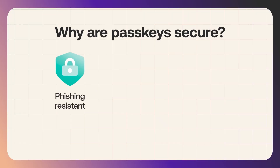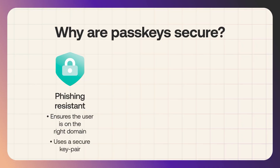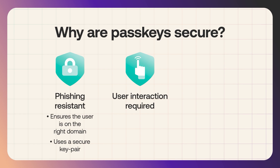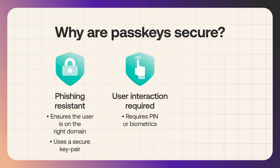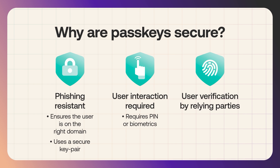Passkeys offer one of the highest levels of assurance that the user authenticating is actually who they say they are. On one hand, you have the phishing resistance aspect, which already enforces that the user is in the right place or the right domain, and also that they're using the same key pair that they used to create the passkey. And on the other hand, you have the fact that passkey authentication always requires some sort of user interaction — you always have to either enter a pin or use your biometrics to use your passkey. Some relying parties enforce user verification, meaning they will force the user to use an authenticator capable of verifying the user's identity, like your Mac's Touch ID or YubiKey's bio series fingerprint reader.